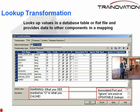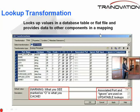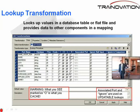Ignore null on input — these are the updatable lookup fields and attributes. We'll cover that later. The same with ignore in comparison. Now, whatever's marked as an O or output field, if you make this lookup reusable —